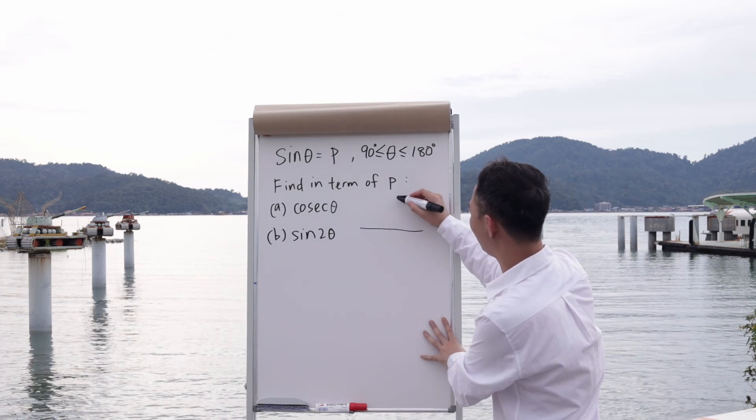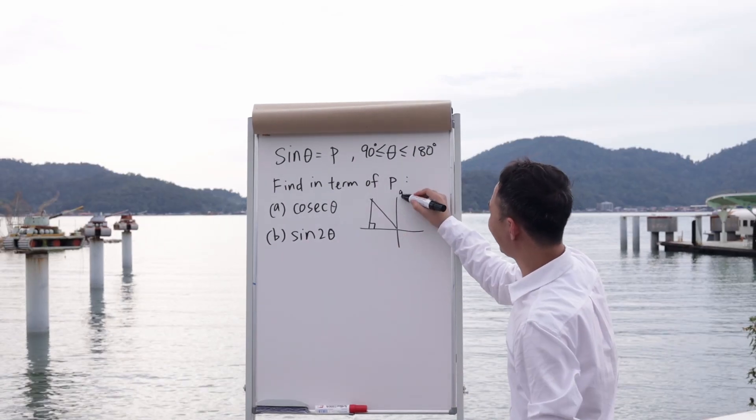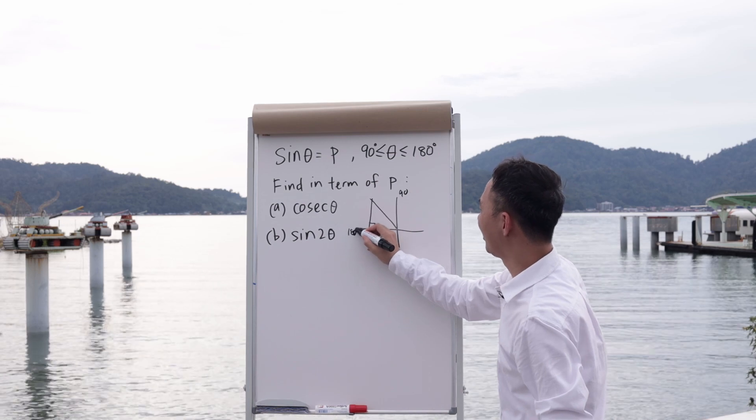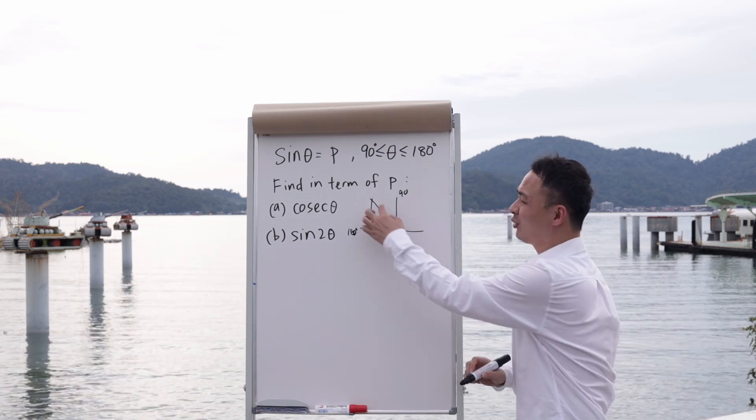Right now I will draw a triangle in the second quadrant. This is between 90 to 180 at this quadrant, and the angle will always be in the middle. Your triangle must look exactly like this.